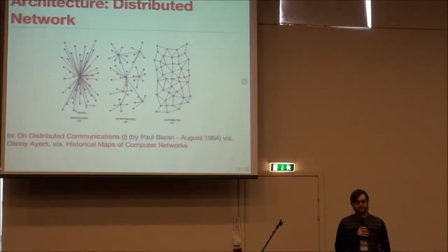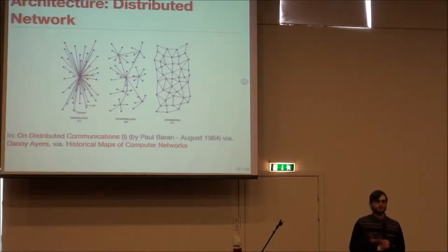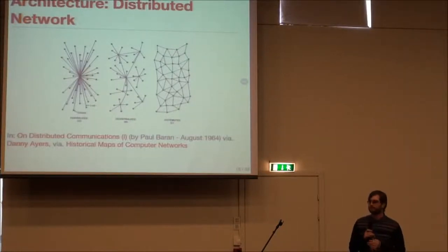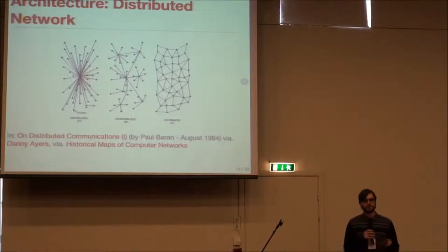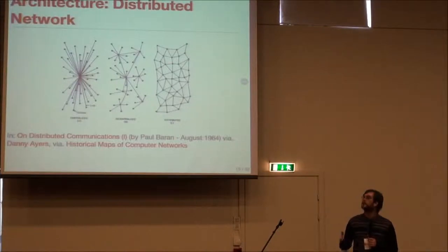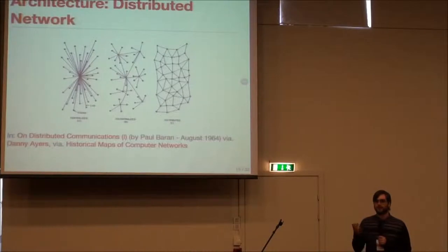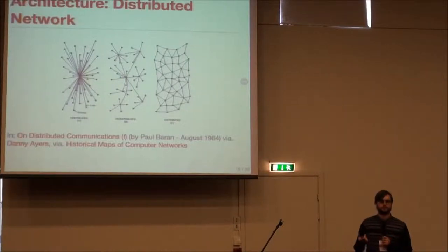Now let's talk about what 'distributed' means. Here you can see a picture showing on the first diagram a centralized network — you have a central server and everyone is connected to it. If the central server is down, no one can use the network. The second picture shows a decentralized network, which is a set of servers that communicate with each other, but if one of them is down then users relying on that server can't use anything. The last picture shows the distributed network, where every node has a connection to every other node, and if one of them is down, others can operate freely and it doesn't really matter if one node is out of the network.